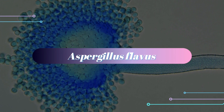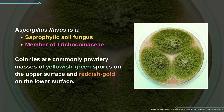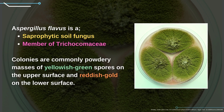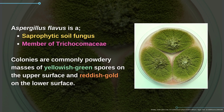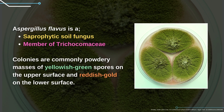Aspergillus flavus is a saprophytic soil fungus and a member of Trichocomaceae. Colonies are commonly powdery masses of yellowish-green spores on the upper surface and reddish gold on the lower surface.